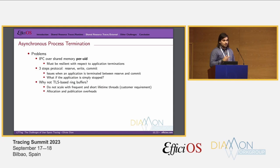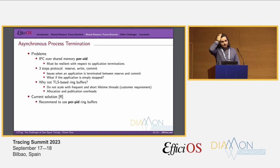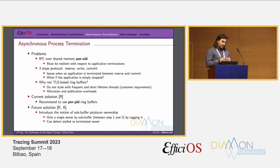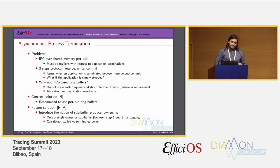Our current solution for reliable tracing is to recommend per-PID ring buffers instead, because if the application crashes we can simply discard that ring buffer entirely with no shared memory problem across other processes under the same UID. As a future solution to improve reliability and adaptability, we want to introduce the notion of sub-buffer producer ownership. The ring buffer has multiple sub-buffers, and two producers cannot write to the same sub-buffer simultaneously — instead one skips to the next. The ownership tag on the sub-buffer, combined with a dedicated algorithm, allows the consumer to detect stalled processes versus terminated owners.